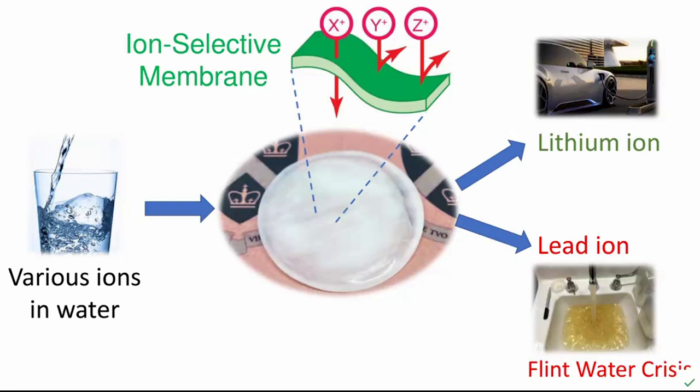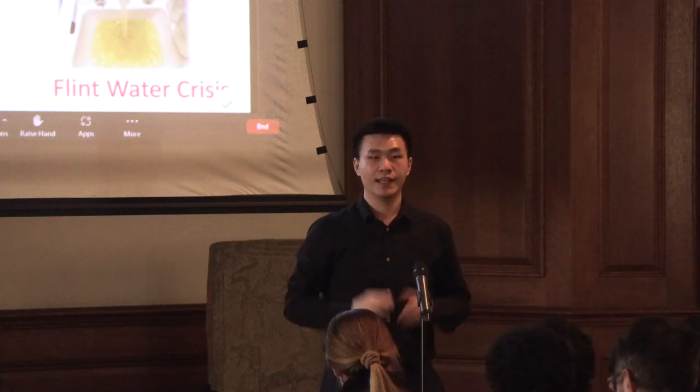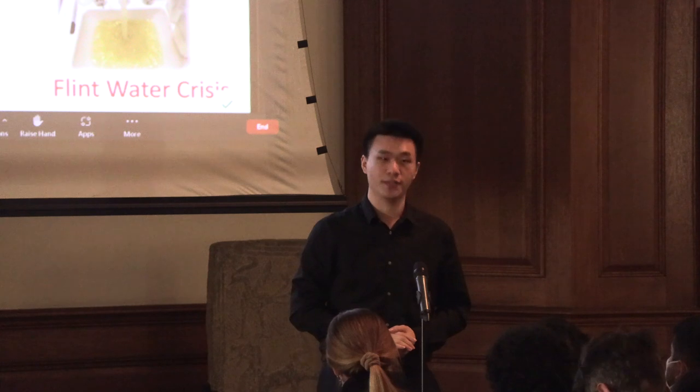This feature has enabled wide applications of such membranes. But what if the ions we want to separate are similar? They have the same charge sign, even the same charge number — for example, the ions shown on the top of the slide. They all carry one positive charge. This is actually beyond the ability of current ion-exchange membranes. In other words, we need to figure out new mechanisms other than charge repulsion and charge attraction.